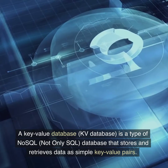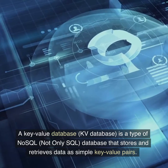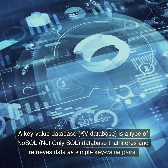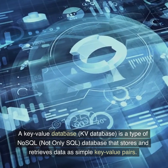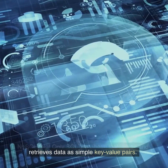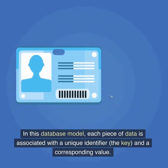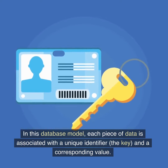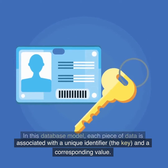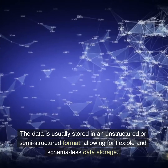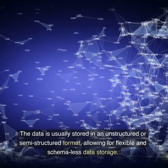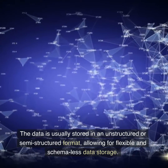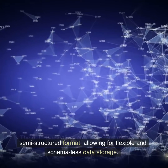A key value database, or KV database, is a type of NoSQL (not only SQL) database that stores and retrieves data as simple key value pairs. In this database model, each piece of data is associated with a unique identifier — the key — and a corresponding value. The data is usually stored in an unstructured or semi-structured format, allowing for flexible and schema-less data storage.